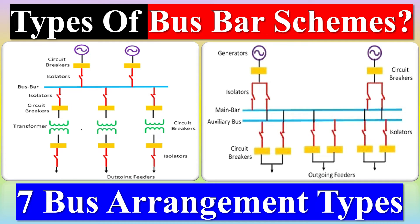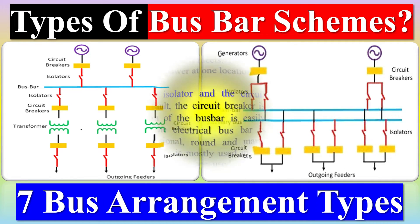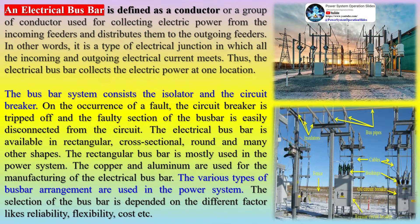An electrical busbar is defined as a conductor or a group of conductors used for collecting electric power from the incoming feeders and distributing them to the outgoing feeders. In other words, it is a type of electrical junction in which all the incoming and outgoing electrical current meets. Thus, the electrical busbar collects the electric power at one location.